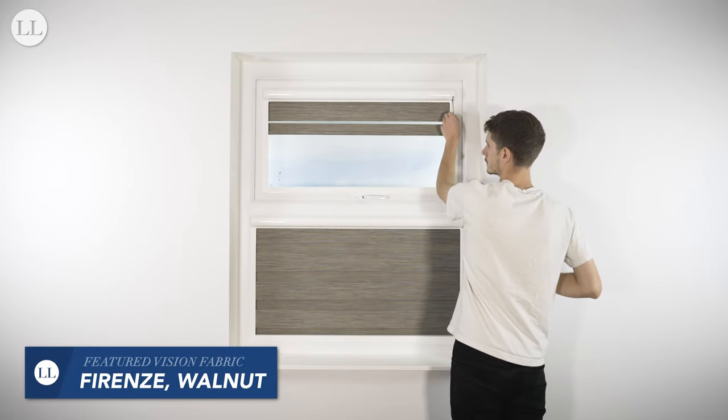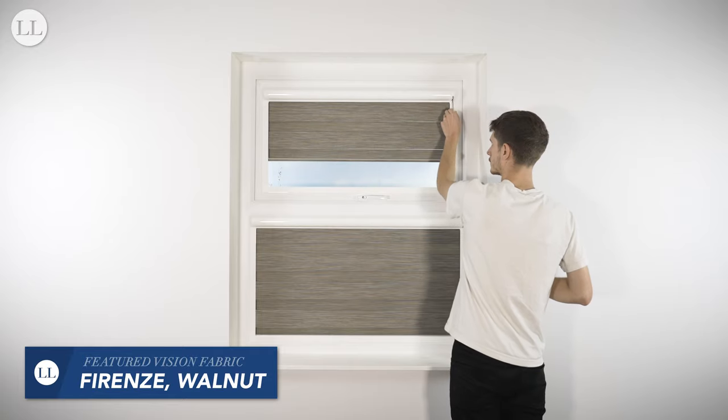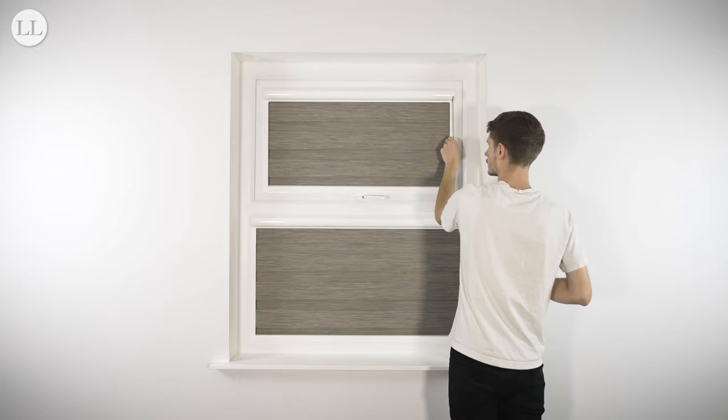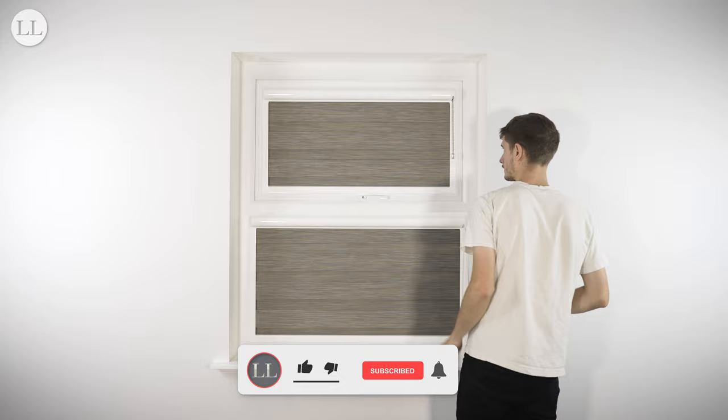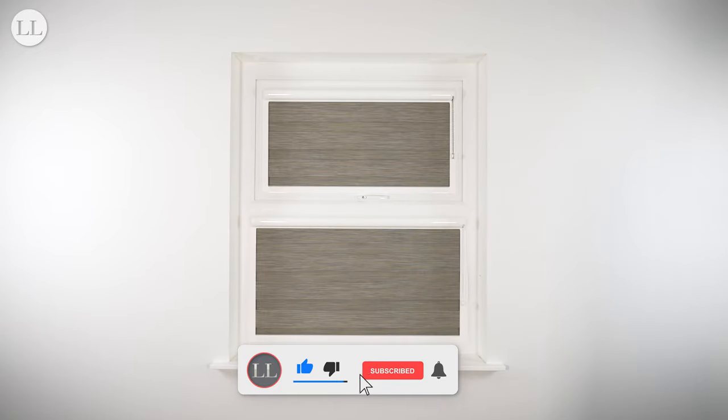Here we have a Perfect Fit Vision Blind. The Perfect Fit range also comes in roller, cellular, and venetian styles. Take a look at our current vision fabric collection by clicking the annotation on screen.